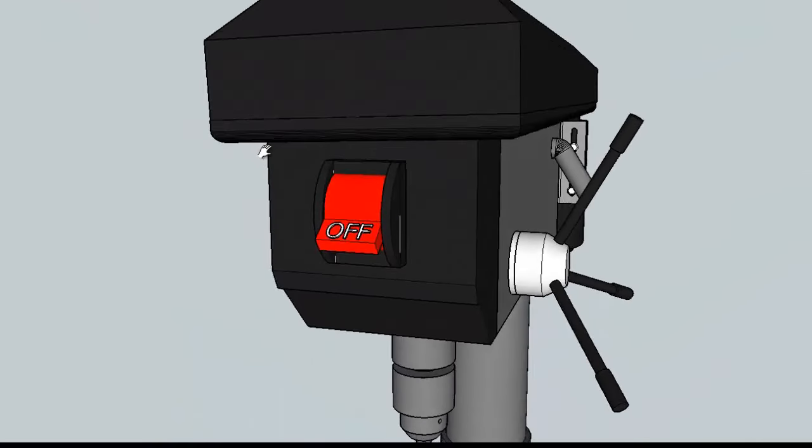The switch is typically located on the front of the drill press right up top. Red switch down is the most common off position. Some have push button switches as well. If anything ever goes wrong with your drill press, remember the first thing you do is you shut it off. So quickly shut it off if you have anything going badly.